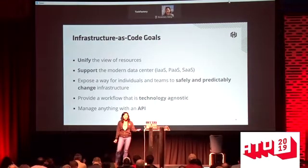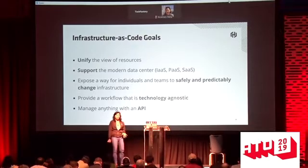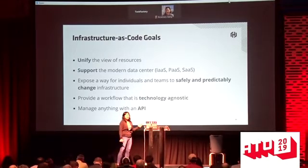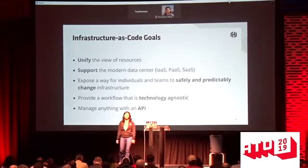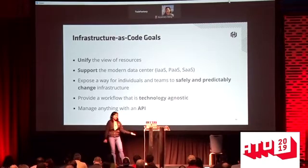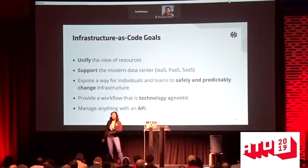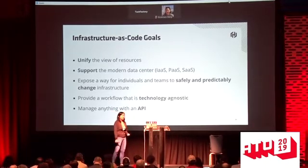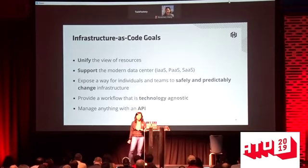The idea behind infrastructure as code, very briefly, is to unify the view of resources and support the modern data center — stretching from infrastructure as a service all the way to software as a service. You expose a way for individuals and teams to safely and predictably make changes. Infrastructure as code is less about tooling and everything about how do you scale collaboration, because that's actually more challenging than building a tool in some regards.